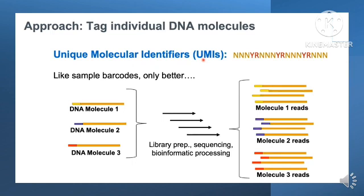Unique molecular identifiers have a random sequence of bases. For example, if you have DNA molecules 1, 2, and 3, you assign different UMIs — yellow represents UMI 1, blue represents UMI 2, and red represents UMI 3. After sequencing, you group all yellow, blue, and red UMIs separately, then check for mutations. If a mutation is not present in all strands of a group, it is likely a sequencing or PCR amplification error rather than a true mutation.